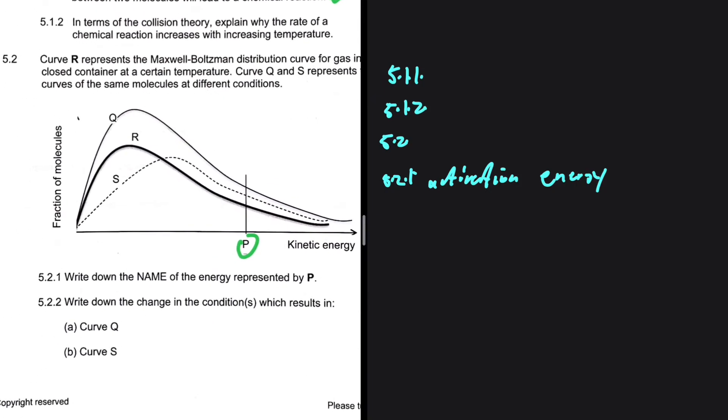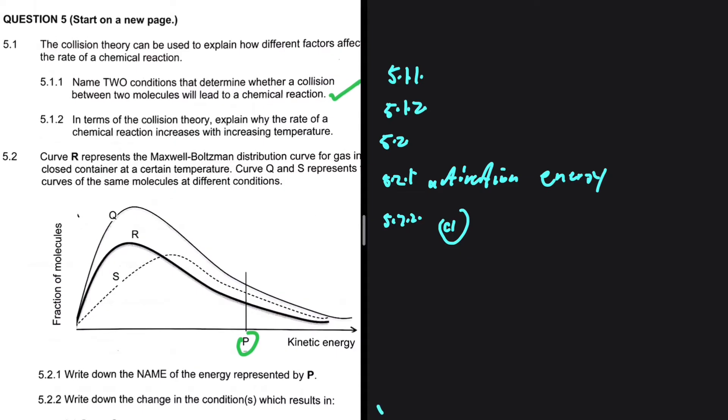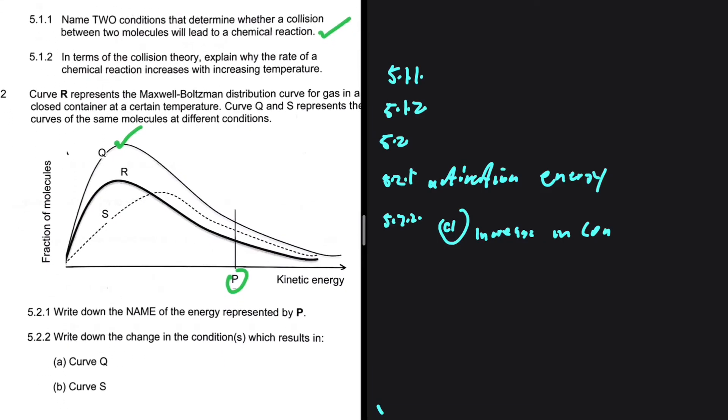And 5.2.2, write down the change in the conditions which results in curve Q. Let's look at curve Q. Curve Q is the same shape as curve R, but it is just slightly above. That is what we expect to see when the concentration has been increased. So we can say that curve Q is a consequence of increase in concentration. If you increase concentration, you expect to see something like curve Q.